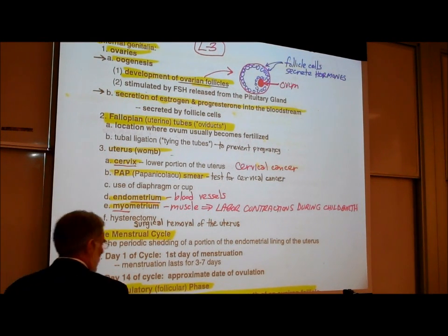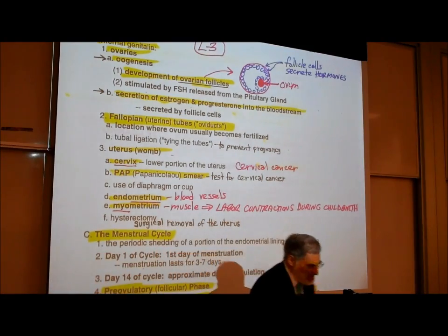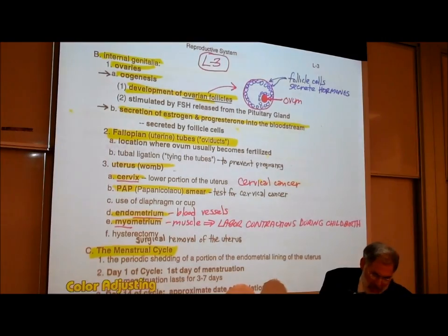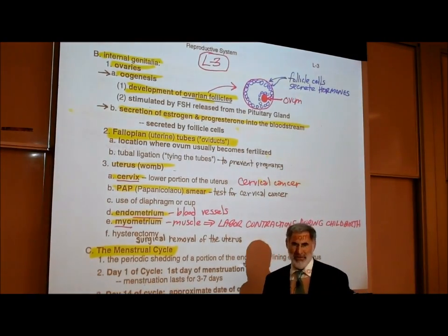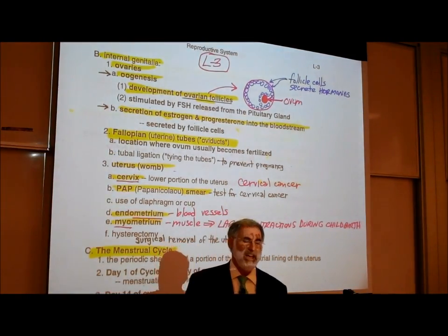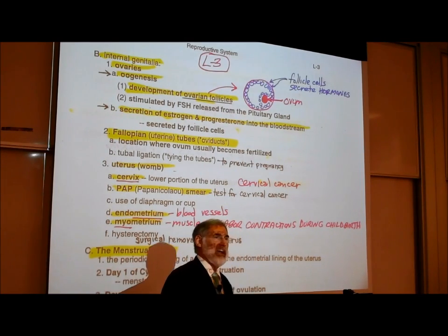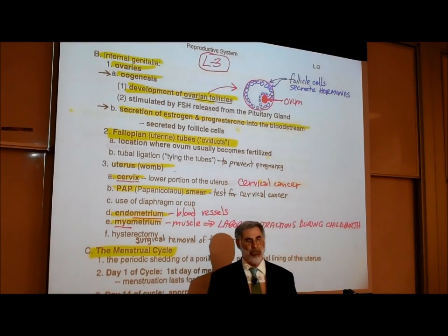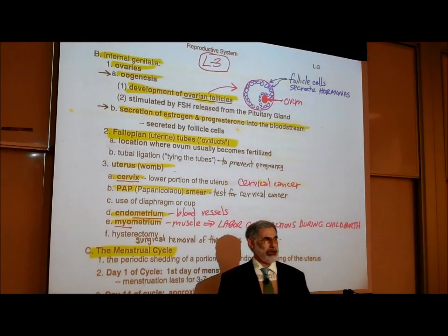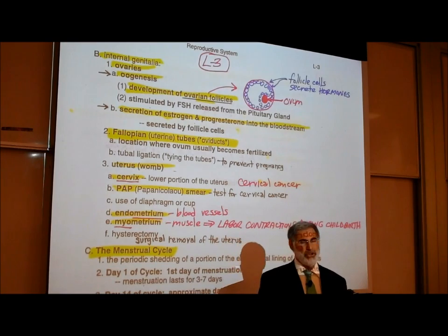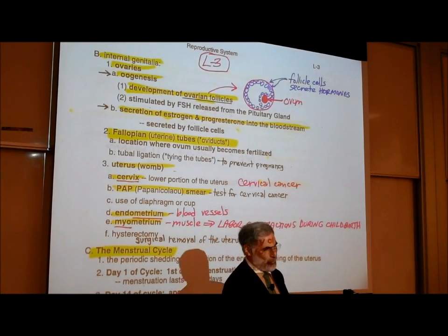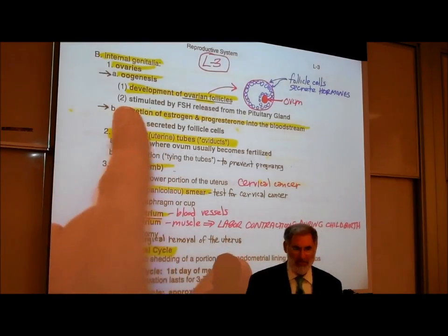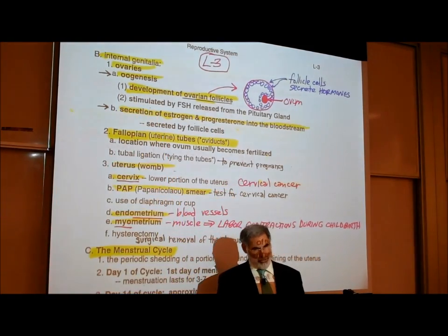On page L3, at the very top, we're describing the internal plumbing of a female. Last time we finished off by describing the external plumbing — the vulva — and we talked about the clitoris, labia minora, urethral orifice, vaginal orifice, the hymen, and so on. So now we're talking about the internal plumbing, and we mentioned the ovaries.